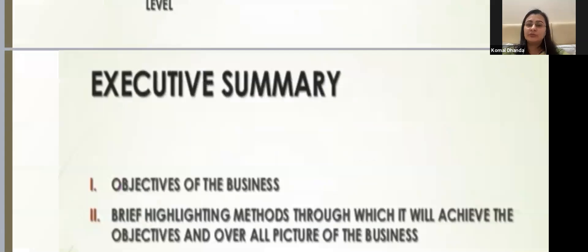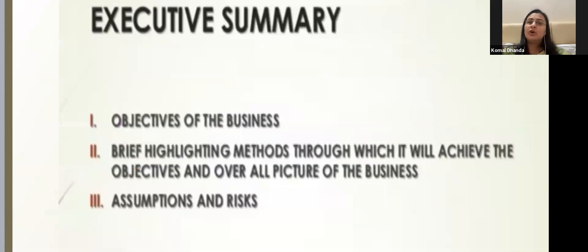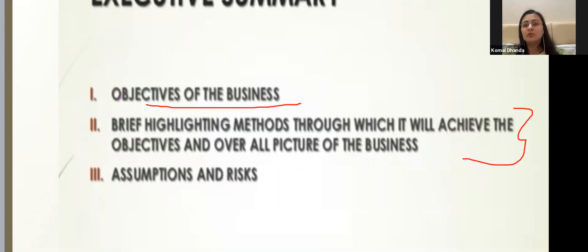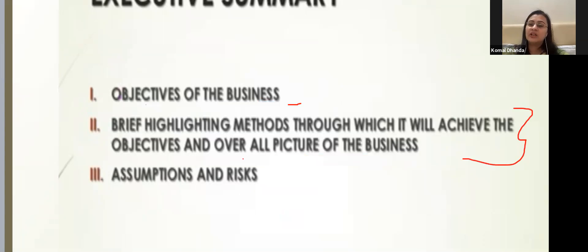After that we have executive summary, which talks about the objectives of the company — your aims and objectives, what methods and strategies you will use to achieve those objectives, the overall picture of the business, and what assumptions and risks you are accounting for — predicting what could happen so that if it comes, you can overcome it.